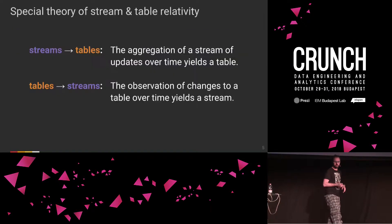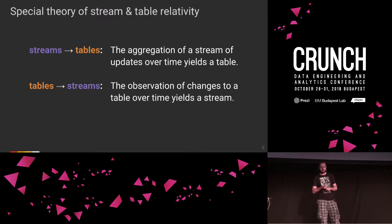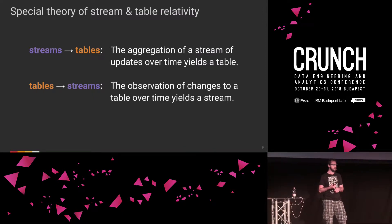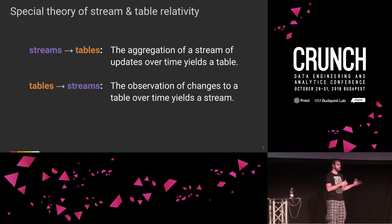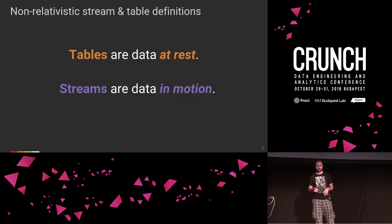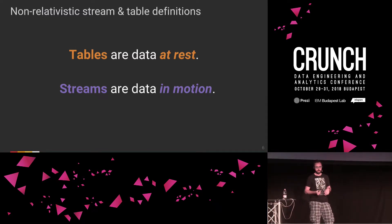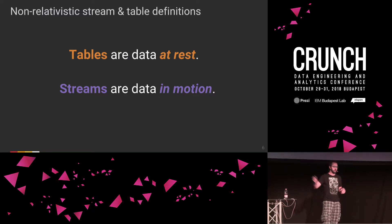Taking those two concepts and applying a bad physics analogy, you could get what I'd call the special theory of stream and table relativity: the aggregation of a stream of updates over time yields a table, and the observation of changes to a table over time yields a stream. It's also useful to define them independently: tables are data at rest — a conceptual place for data to get grouped together and reside — whereas streams are data in motion, the sequence of changes flowing from one place to the next.